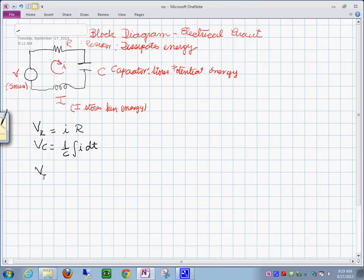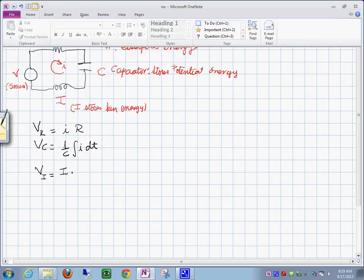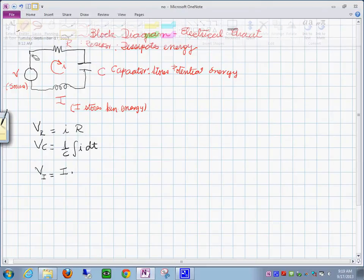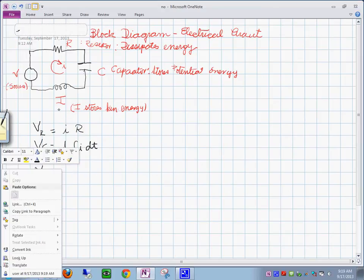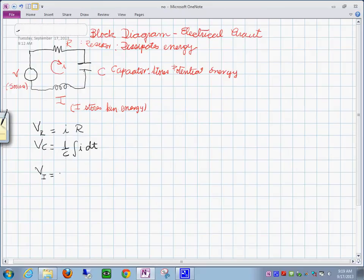Then you have the voltage across the inductor. This is L times di dt. Therefore, we can write the equation.